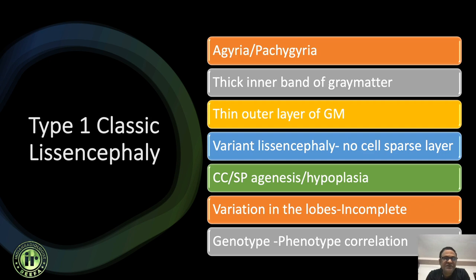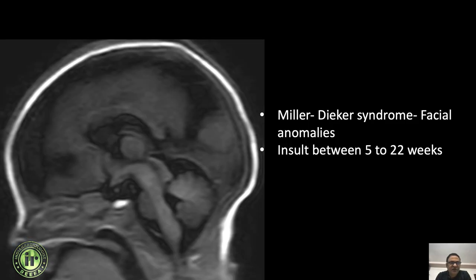At least three genetic forms have been described in this condition, which we can discuss in a separate lecture. The midline corpus callosum is not well-developed but is partially present. There is mild dysplasia of the brainstem. Since we have facial abnormalities, we consider the possibility of Miller-Dieker syndrome.